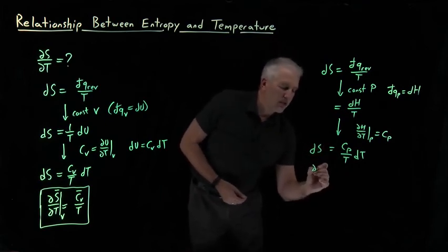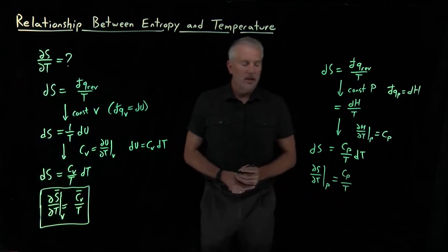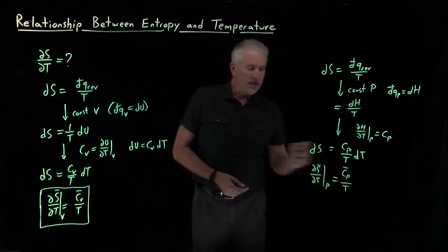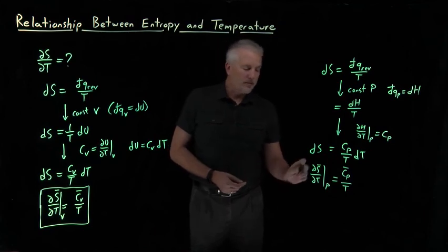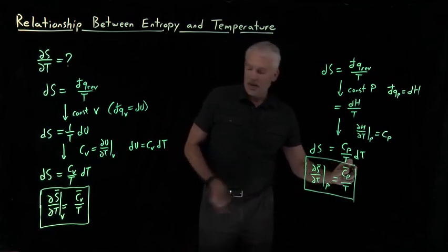Or if I write that as a derivative, ds divided by dt, if it's done at constant pressure, will be heat capacity over temperature. Again, I could use the extensive formula. I'll usually prefer to use the intensive version of that equation. So that's the equivalent of the statement we obtained over here.